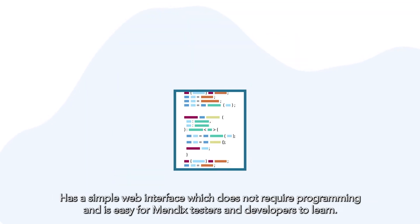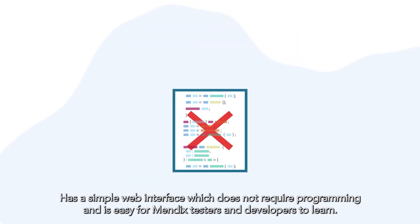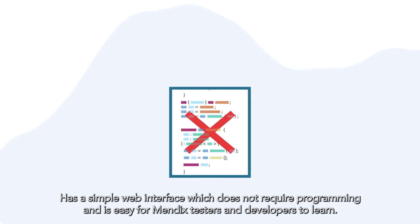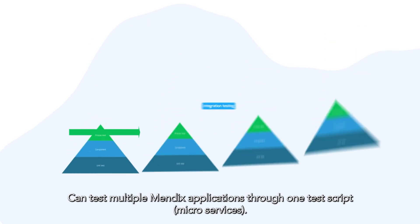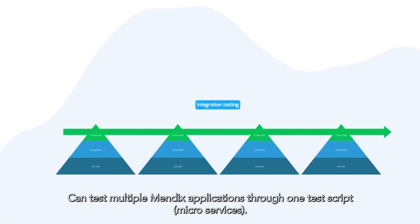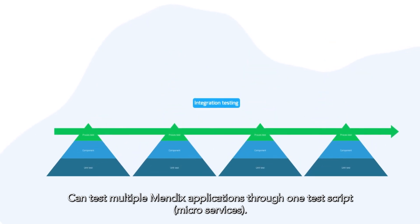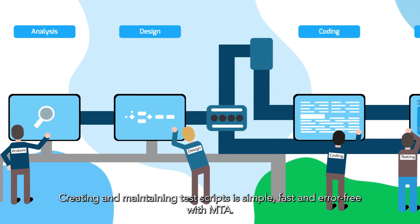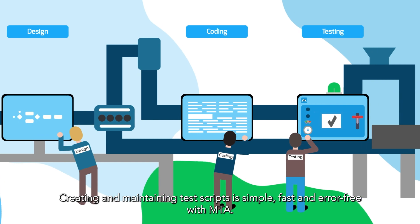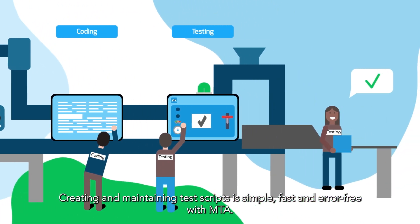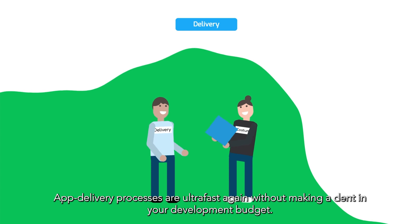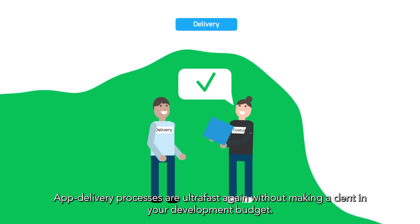MTA has a simple web interface which does not require programming, and is easy for Mendix testers and developers to learn. It can test multiple Mendix applications through one test script — micro-services. Creating and maintaining test scripts is simple, fast, and error-free with MTA. App delivery processes are ultra-fast again, without making a dent in your development budget.